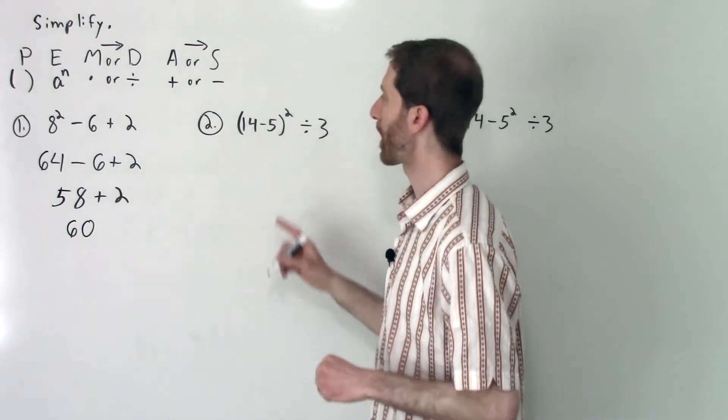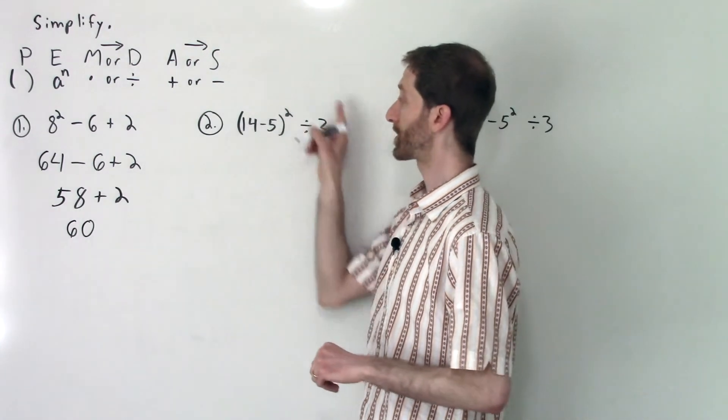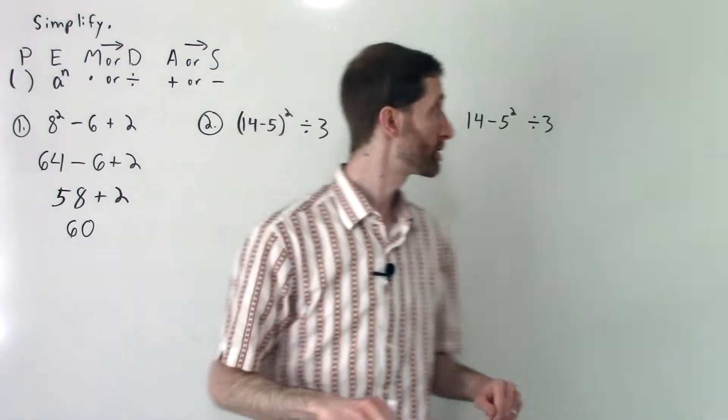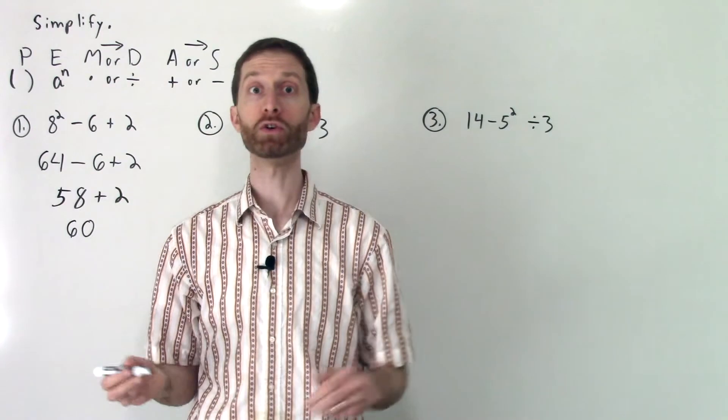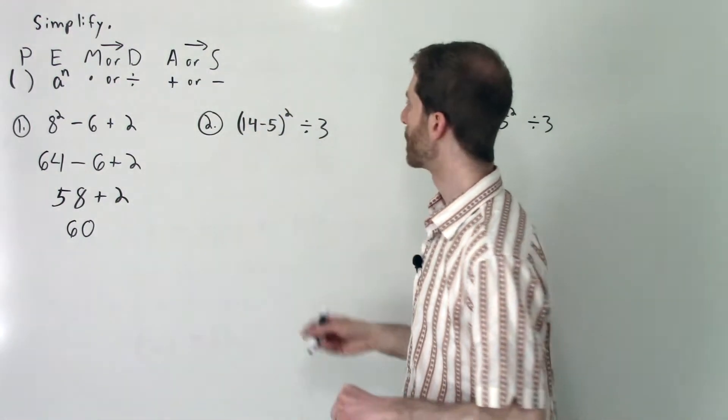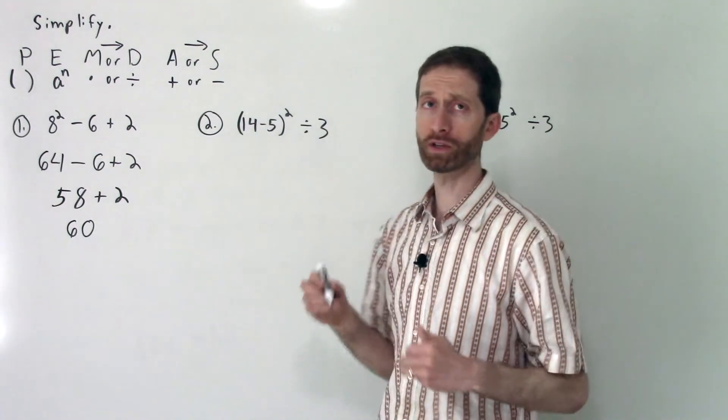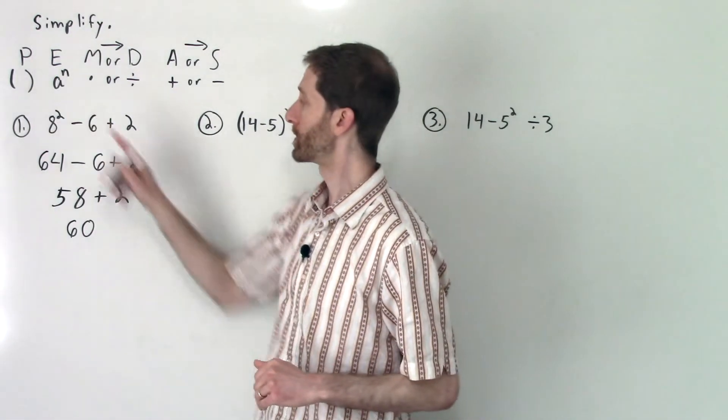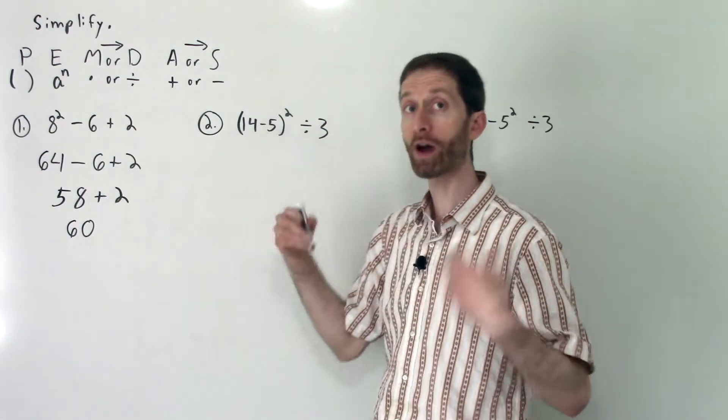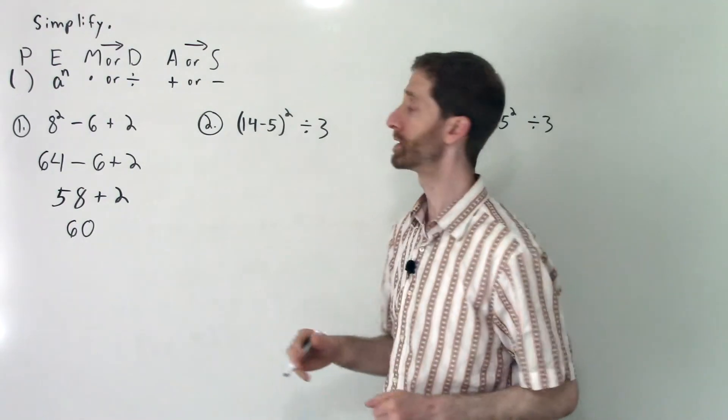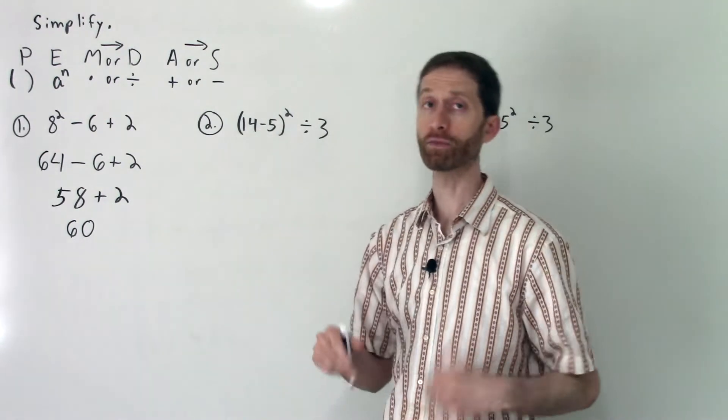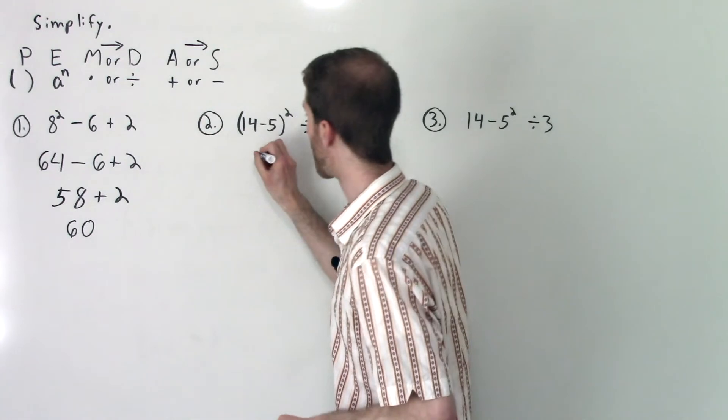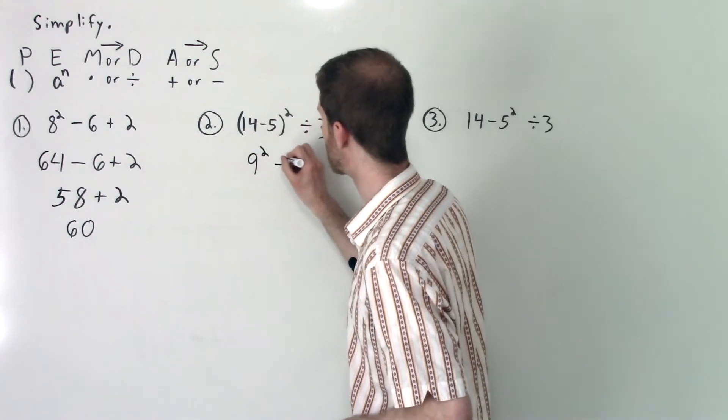In the next two problems I've basically given you the same problem one with parentheses and one without just to show you how much grouping symbols matter. We're going to do the grouping symbol operations first. That's 14 - 5 which is 9. So I get 9² ÷ 3.